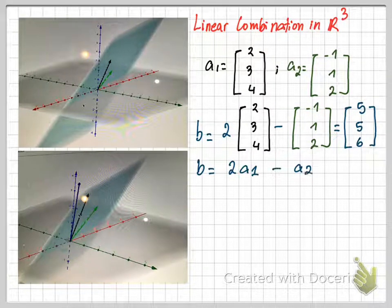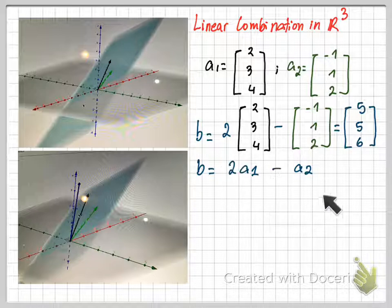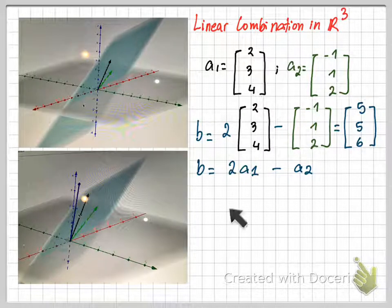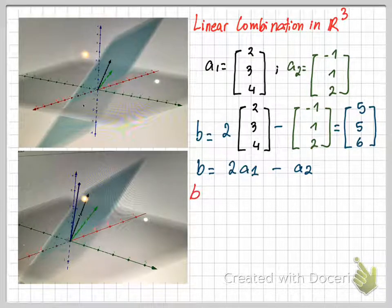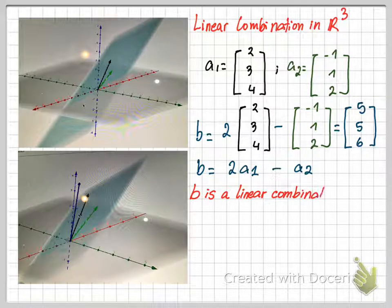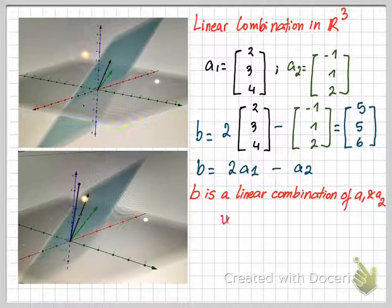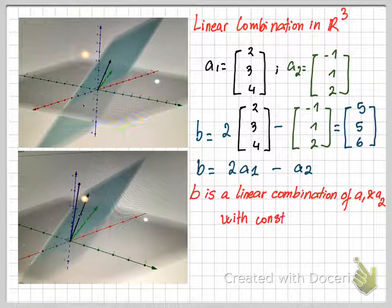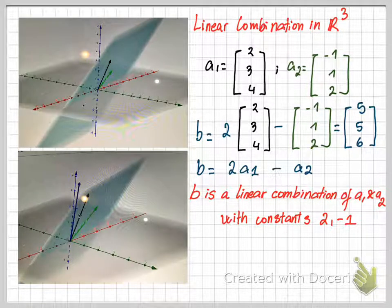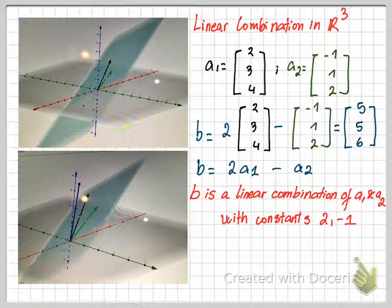Vector B can be written as a linear combination of A1 and A2, because B equals 2 times A1 minus A2. By definition, B is a linear combination of A1 and A2 with constants 2 and -1. You can use constants or scalars, which have the same meaning.